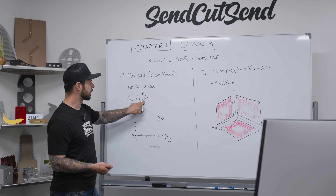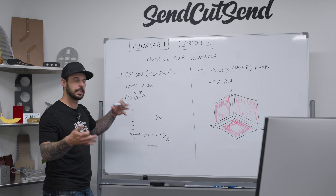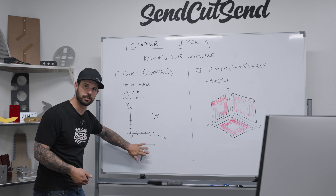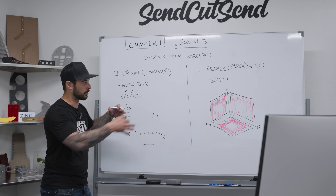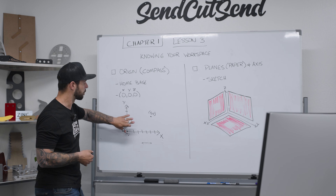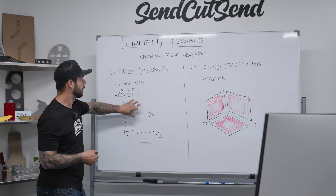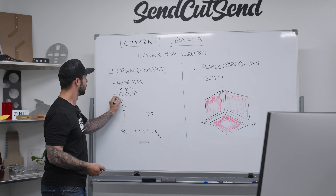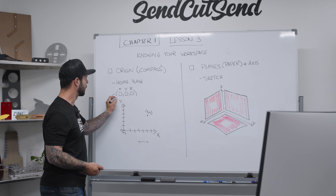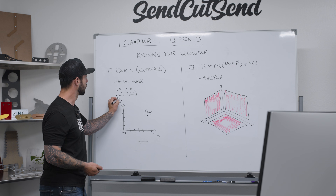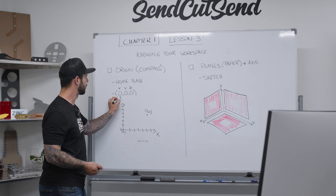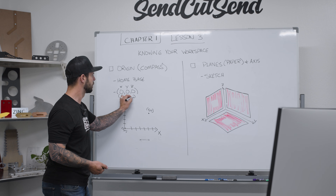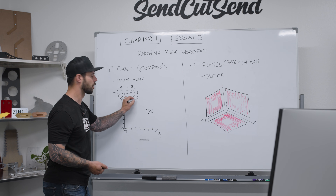The one thing we're missing right now is Z. Since we have a two-dimensional surface, we have zero for Z — and this is actually diving into the plane concept. So this point would be X=5, Y=4, Z=0.